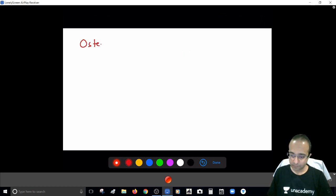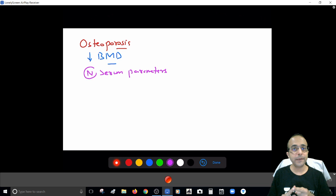Osteoporosis, you are very much familiar with this term. It is basically a decrease in bone mineral density. Bone mineral means bone calcium content goes down. Mind you, the serum parameters are all normal. Normal serum parameters, which means normal calcium, normal vitamin D, normal alkaline phosphatase. It is specifically the bone mineral content that goes down.